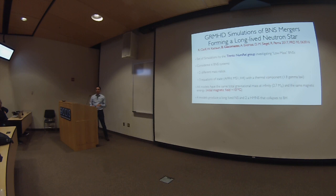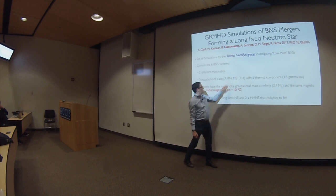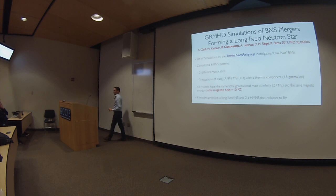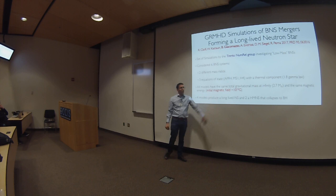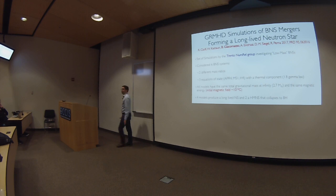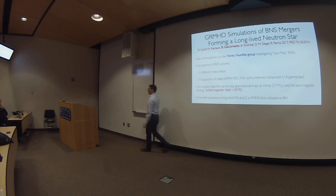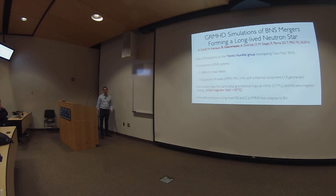In this paper we consider six different binary neutron star systems: two mass ratios (equal mass and mass ratio 0.9) and three different equations of state — APR4, MS1, and H4. APR4 still satisfies gravitational wave constraints; MS1 is ruled out; H4 is borderline. All are piecewise polytropic equations of state with a thermal component added via a simple gamma-law. Importantly, all models have the same total gravitational mass at infinity — 2.7 solar masses — and the same total magnetic energy, corresponding to an initial magnetic field of order 10^15 Gauss. We started with a larger-than-realistic field because we don't have the resolution to resolve magnetic field amplification.